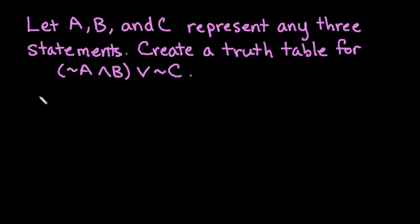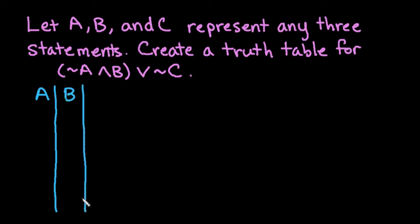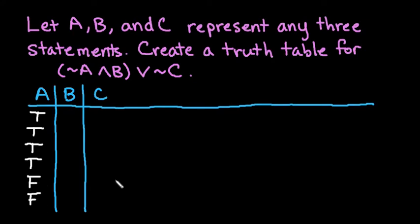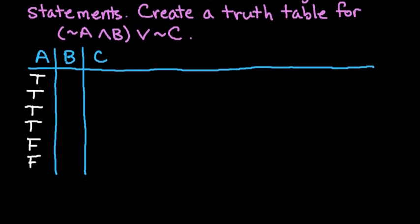So what we're going to do is start by setting up our truth table with the three variables that we are given. When you get into three variables or more, it becomes a little more complex as far as setting up the starting part. But it always follows the same pattern. The first column is always going to follow the pattern true, true, true, followed by false, false, false.